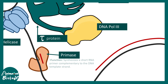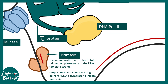Then there is primase, whose function is to synthesize a short RNA primer complementary to the DNA strand, thereby starting the process of DNA synthesis. It gives the polymerase a primer to begin the entire synthesis, because DNA polymerase cannot start the process by itself — this small RNA primer is the key step for synthesizing DNA.